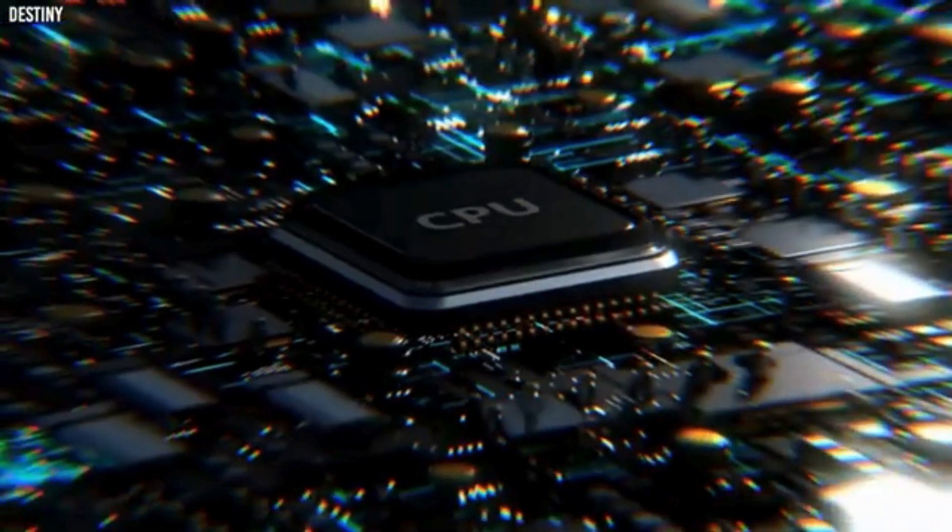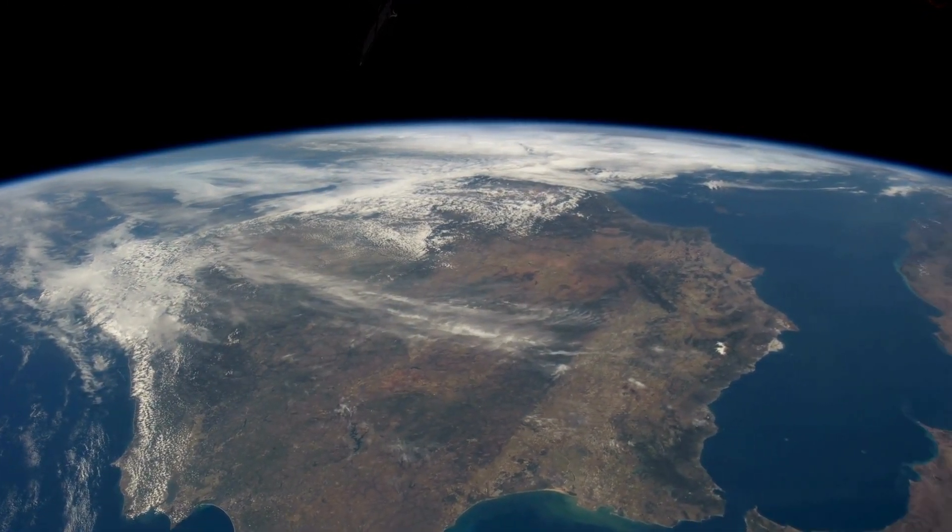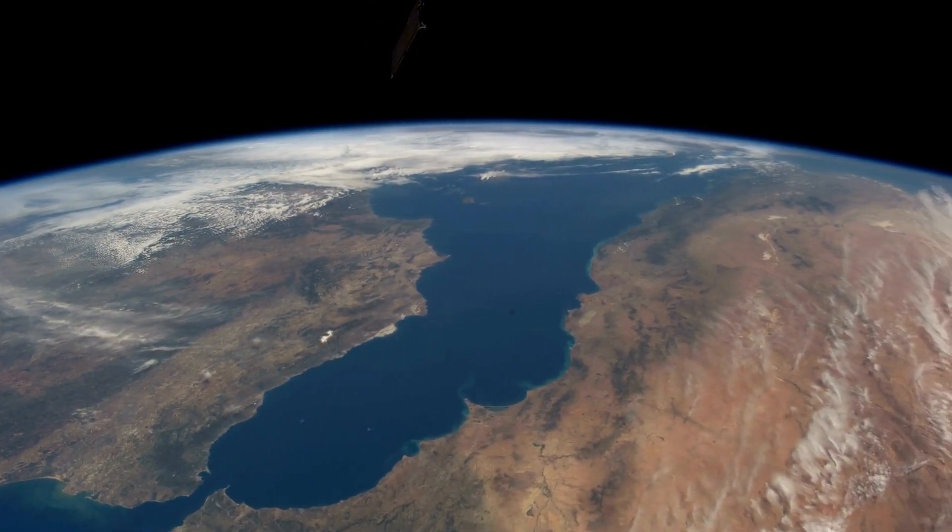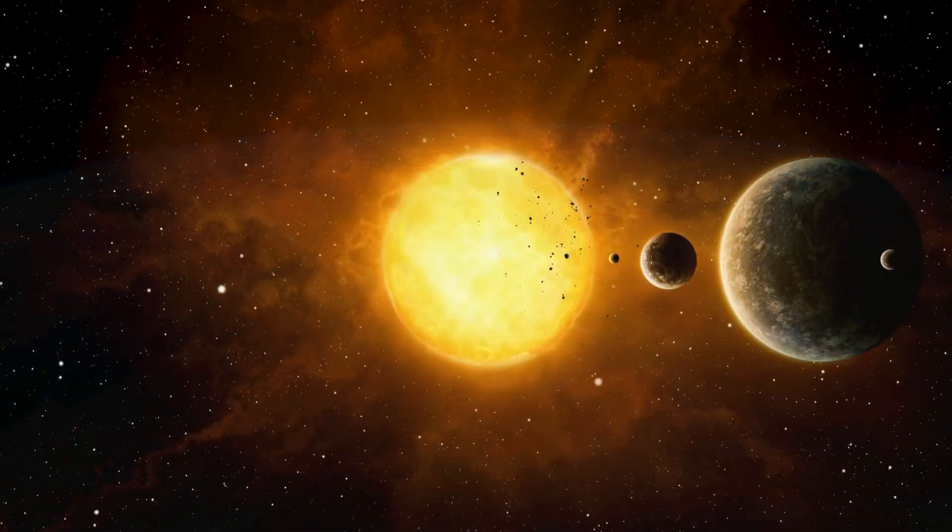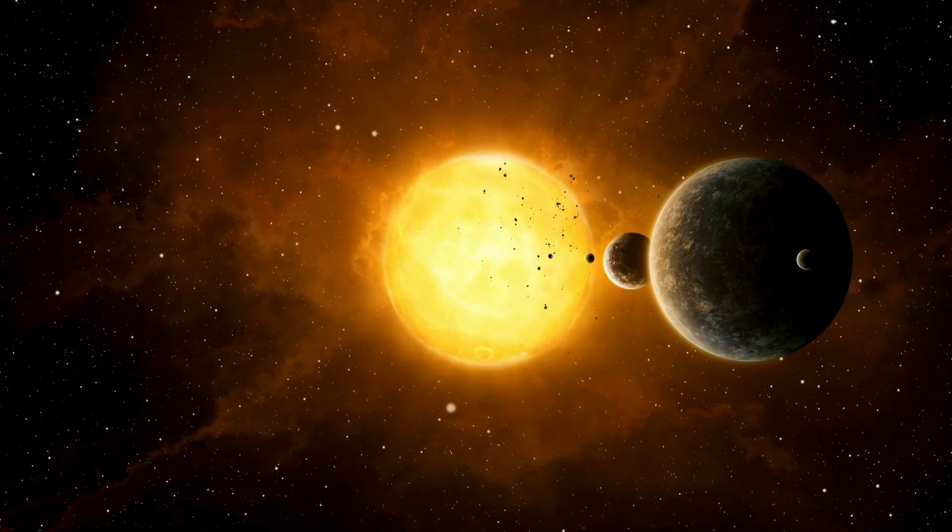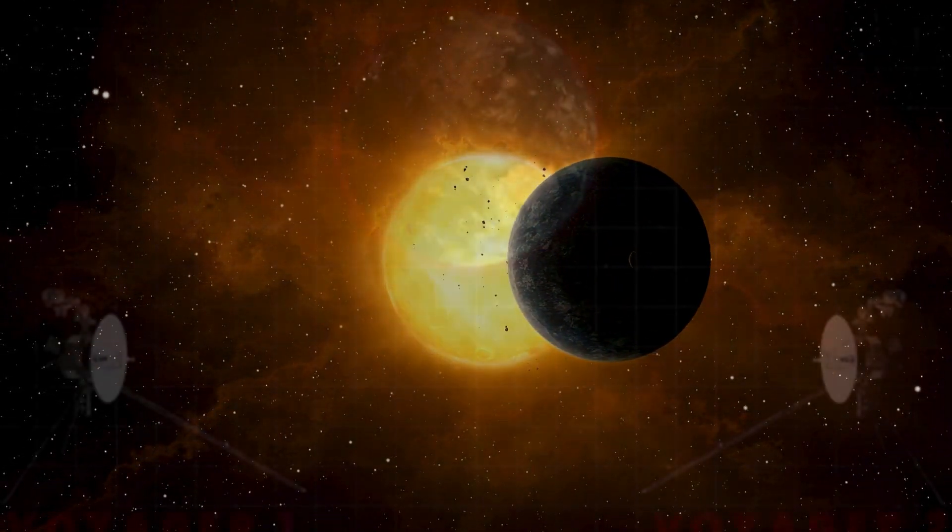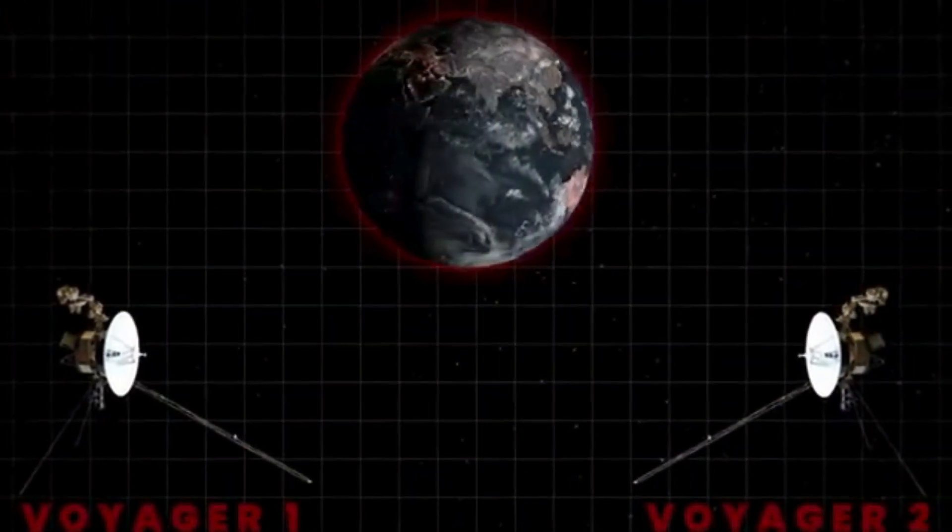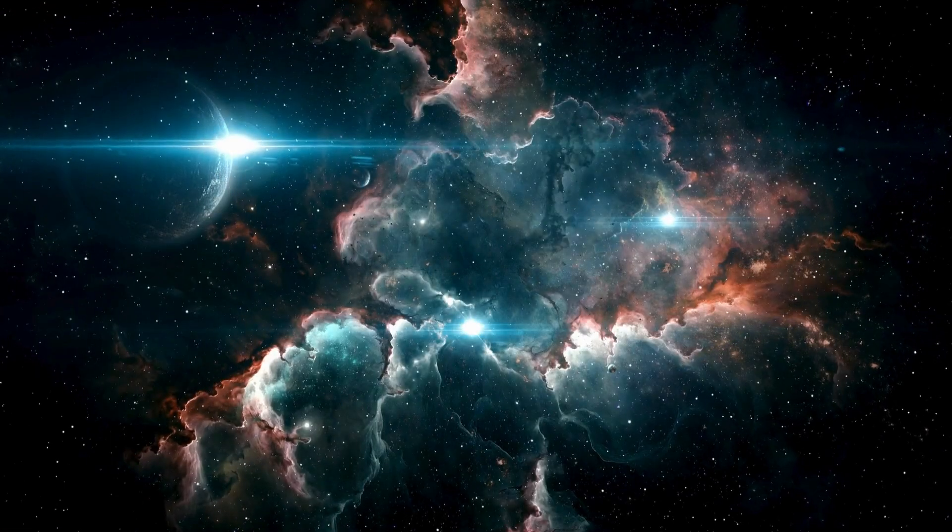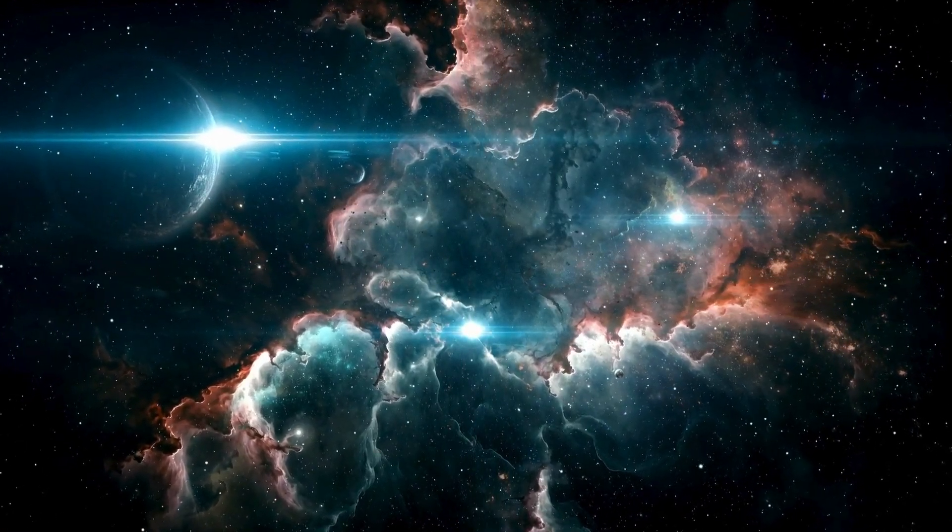The two Voyager craft, both launched in 1977, were built to last five years. They're now approaching 50 years of operation and are respectively over 15 and 12 billion miles away. They've left behind the influence of our star and entered interstellar space. These are the only spacecraft that have been there.